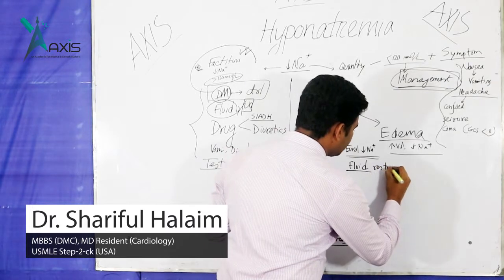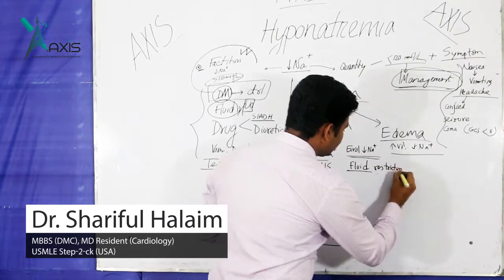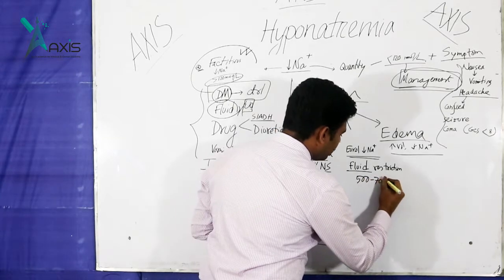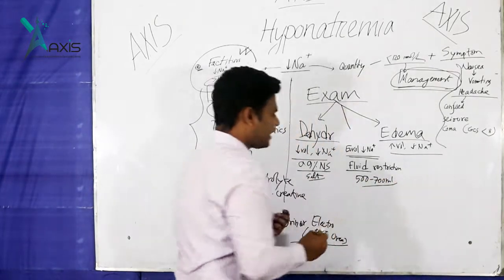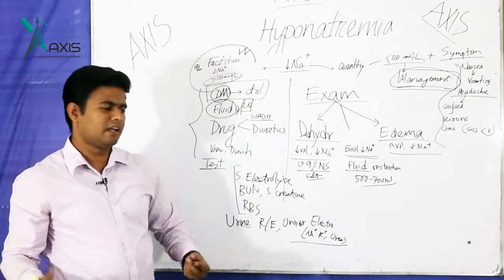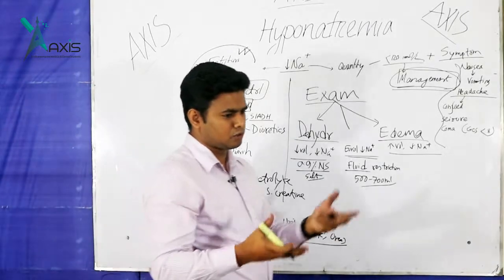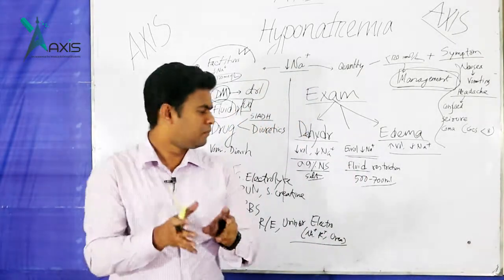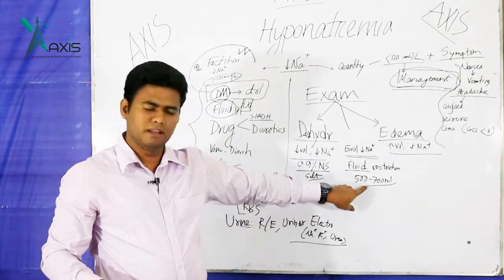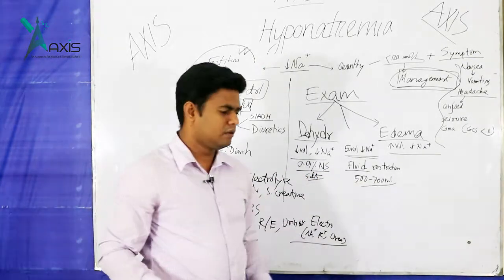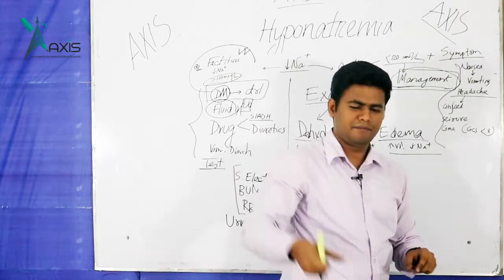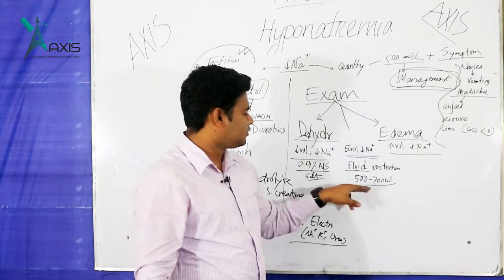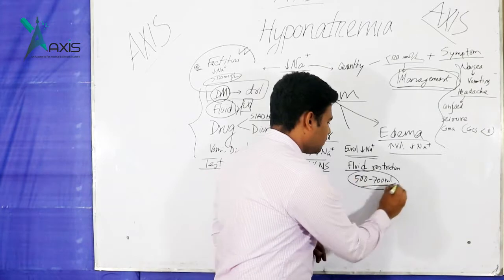For fluid restriction, the rough average is around 600 ml of fluid per day. A common way to explain this: take a 1-liter bottle or a half-liter (500 ml) bottle. If the target is 600 ml, give half a liter from a 1-liter bottle and then allow only one extra glass of water — totaling approximately 600 ml. This is how we implement fluid restriction.